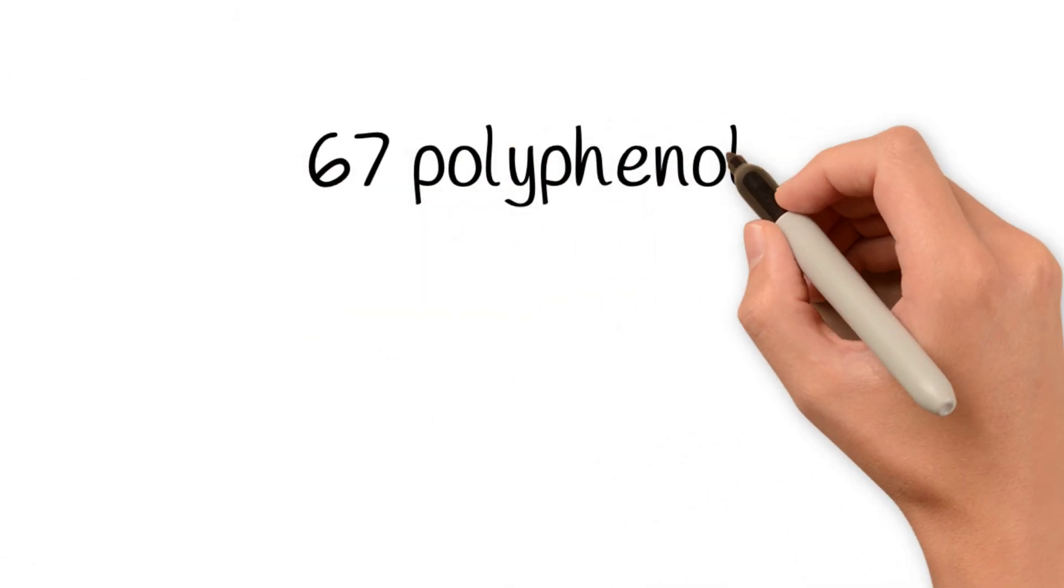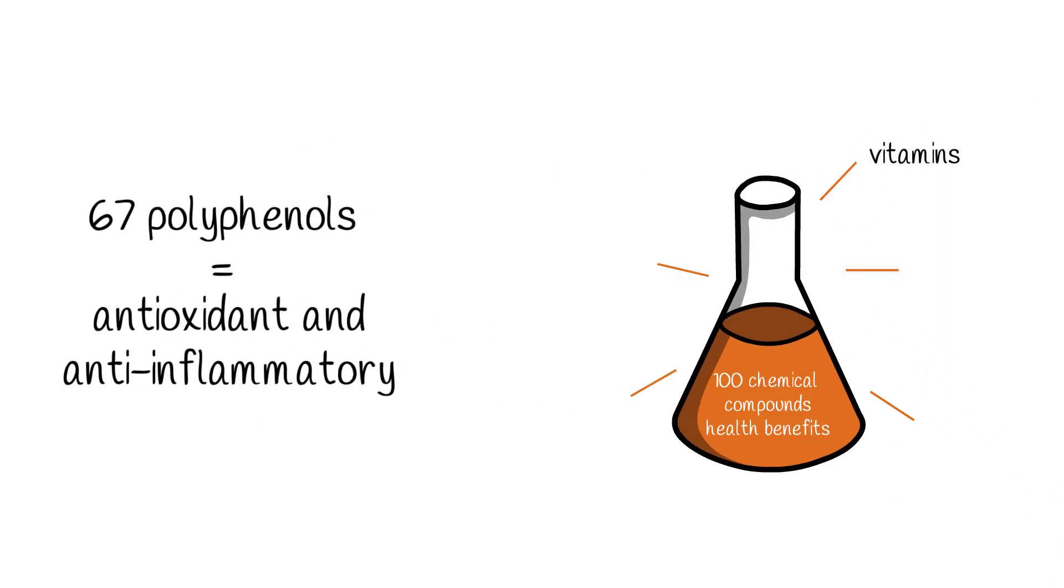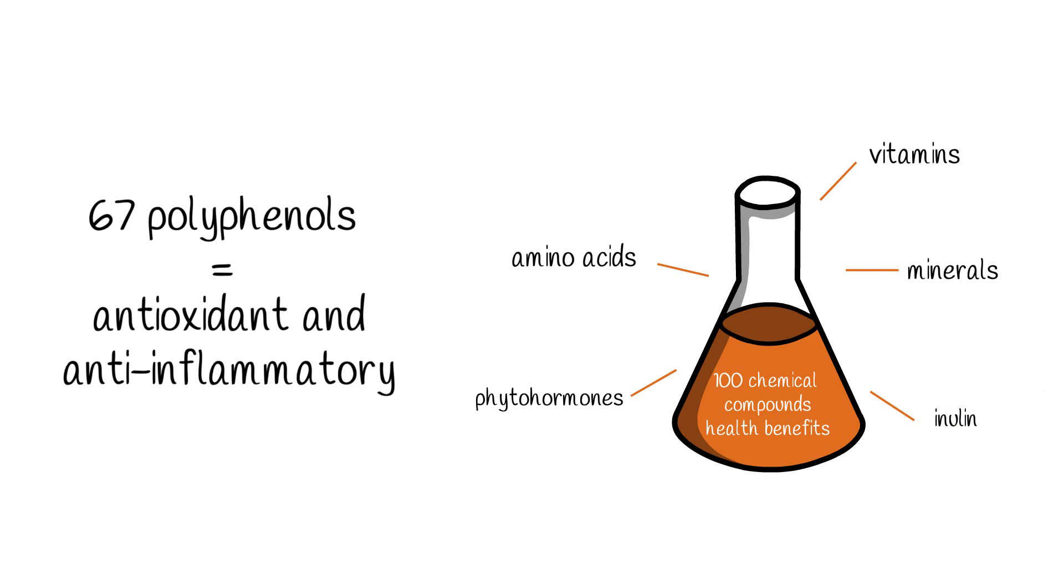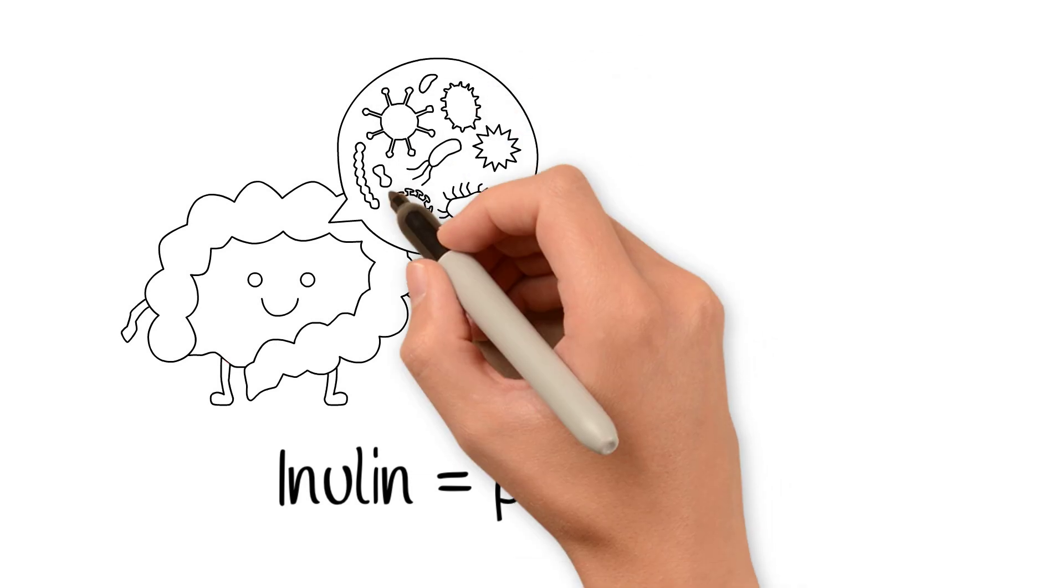It has 67 polyphenols, 9 of which are unique to it. It contains a wide range of vitamins and minerals, amino acids, phytohormones, and inulin, which acts as a prebiotic that encourages the growth of good bacteria in the gut.